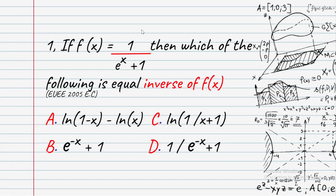So finally, if f of x equals 1 over e to the power of x plus 1, the inverse of f of x equals: option A, option B, or option C which is ln in the bracket 1 over x plus 1.